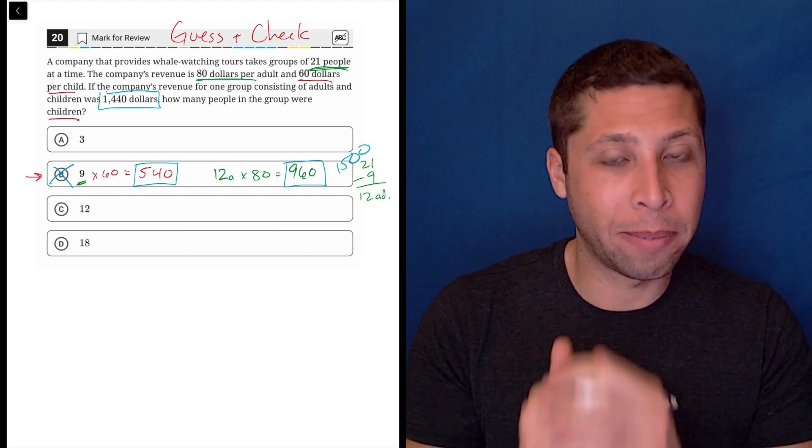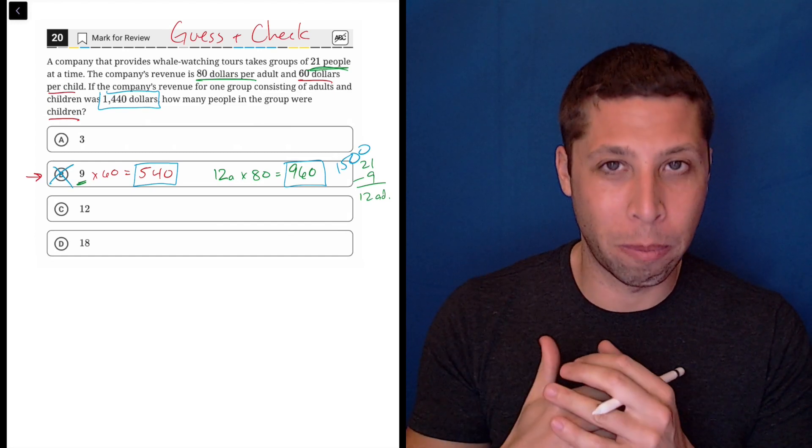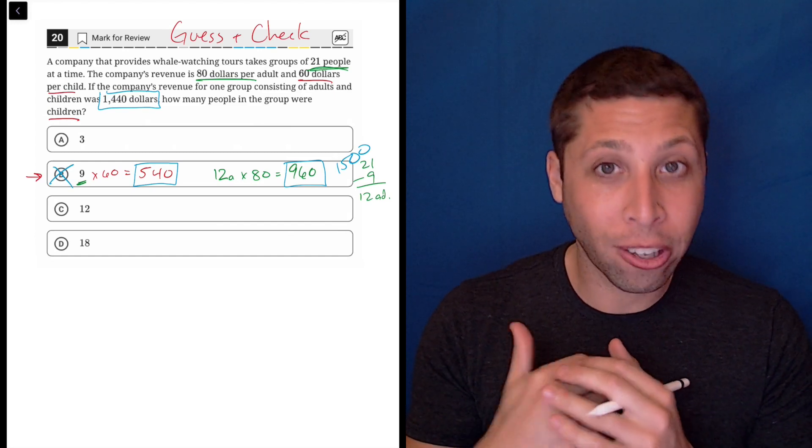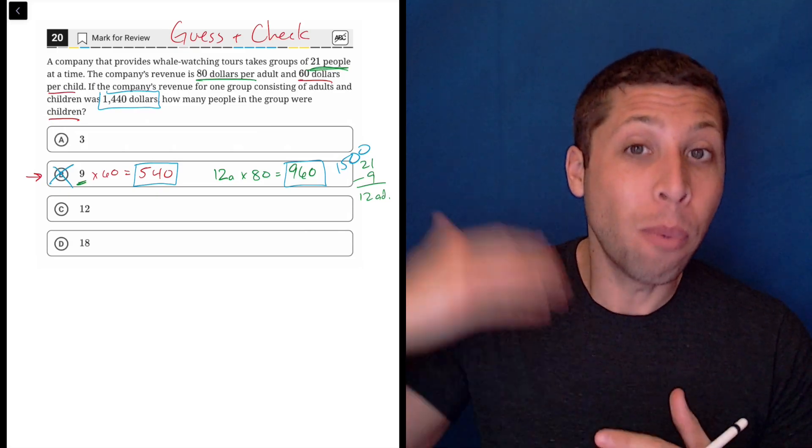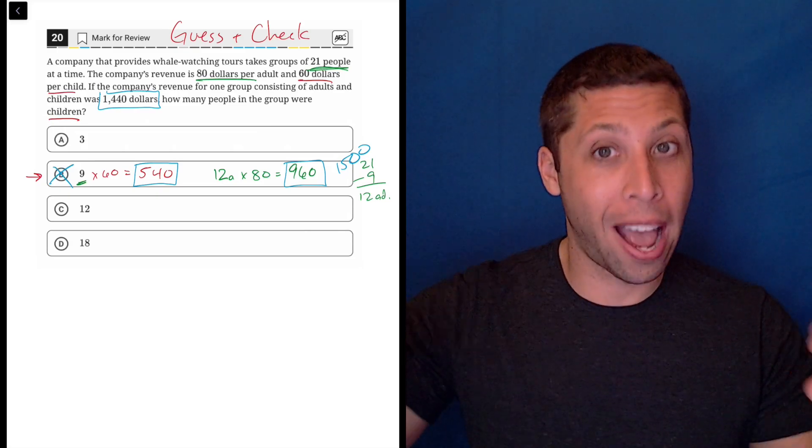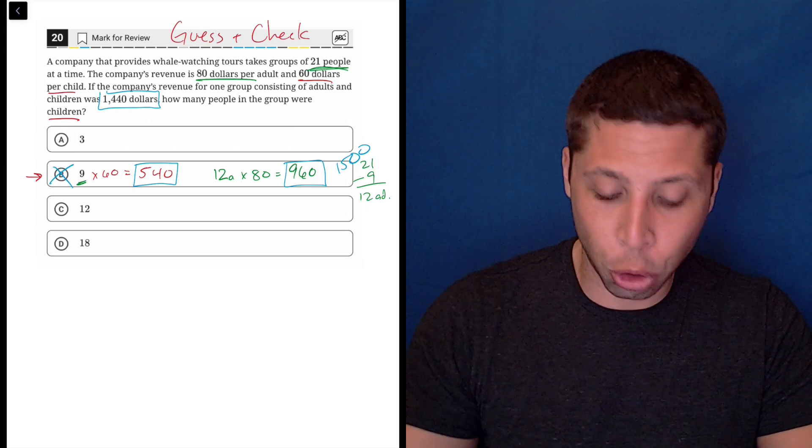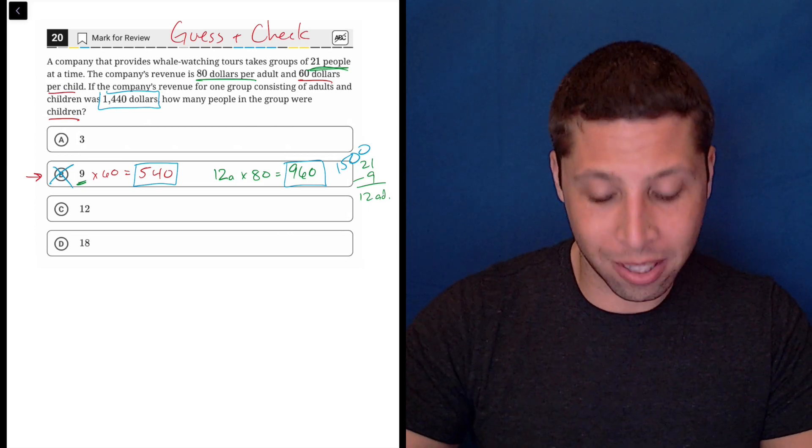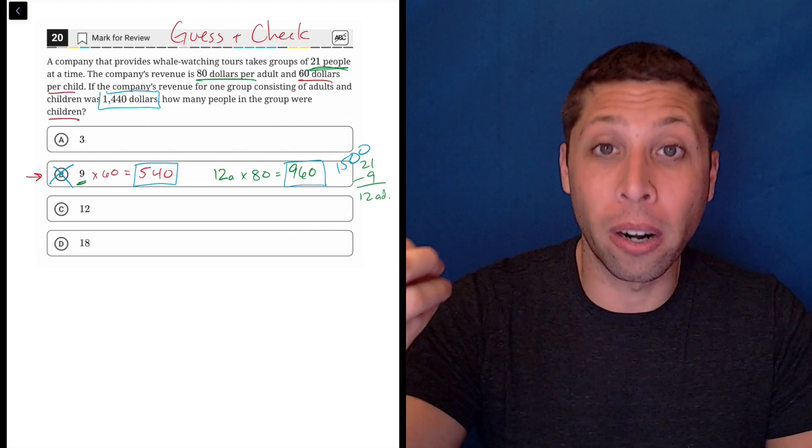So think about this for a second before you choose your next answer. What's going to lower the overall cost of these 21 people? We actually want to have more children because children are cheap. So if we had more of the cheap thing, we would have a less overall price. So that means even though it's too big, we're not going to go towards choice A. We're going to go towards choice C. We're going to get a bigger number because the bigger number represents the cheaper item, the children.